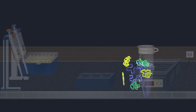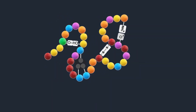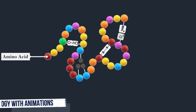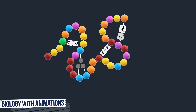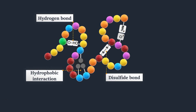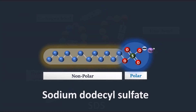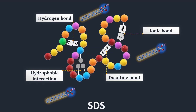Proteins are large biomolecules consisting of one or more long chains of amino acid residues. They are formed by linking amino acids with peptide bonds and fold into specific spatial conformations driven by a number of interactions such as hydrogen bonds, hydrophobic interactions, disulfide bonds, and ionic bonds. SDS is an anionic surfactant that contains a polar head group with a net negative charge at the end of a long hydrophobic carbon chain. SDS denatures native proteins by disturbing the non-covalent forces.